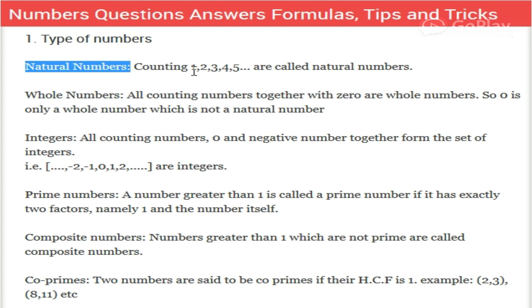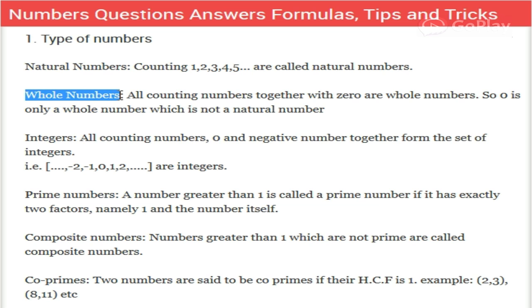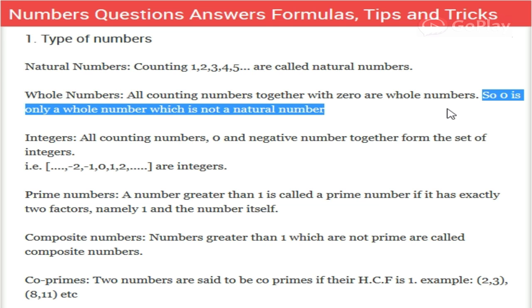But when we start from zero - that is zero, one, two, three, four, five, and so on - then it becomes whole numbers. Zero is the only whole number which is not a natural number, because natural numbers start from one.